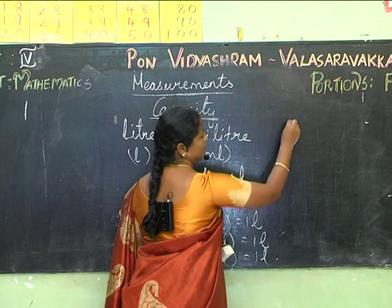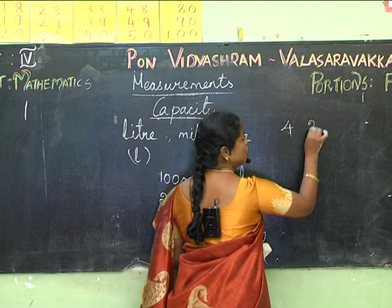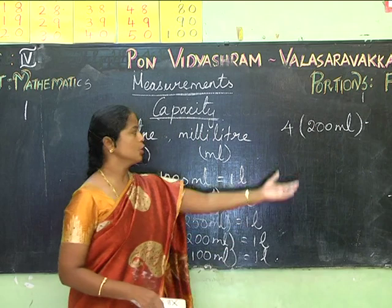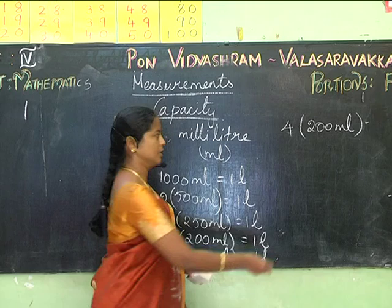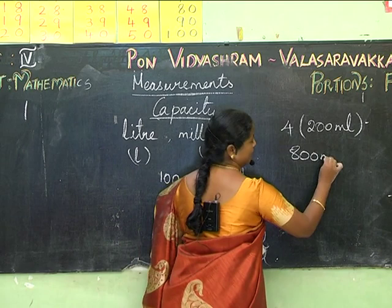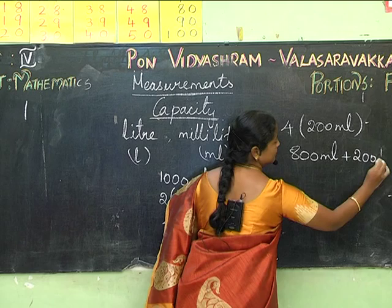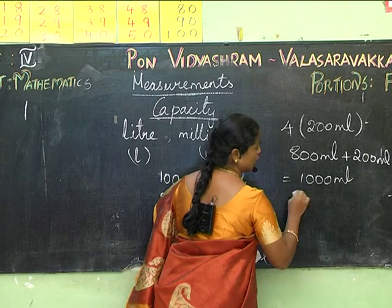If I have 4 bottles of 200 mL, that is 4 × 200 = 800 mL of water. What should be added to make 1 liter? Since 1000 − 800 = 200, I should add 200 mL to make 1000 mL, which equals 1 liter.